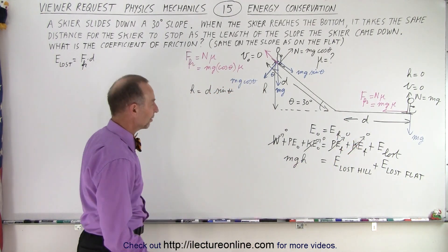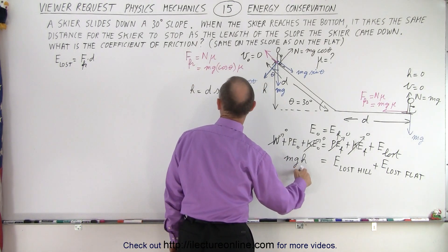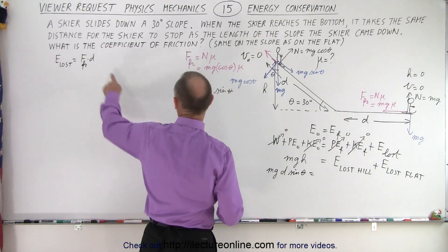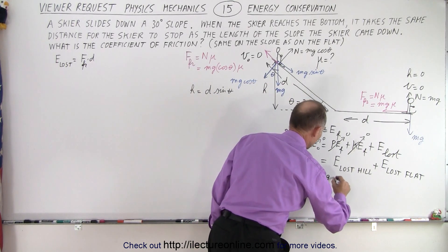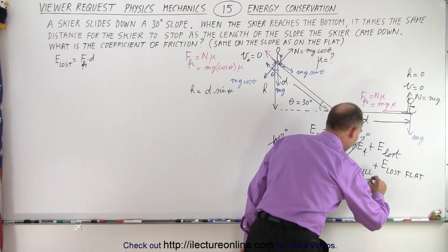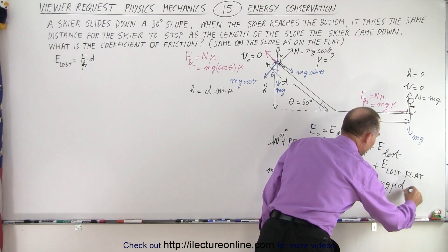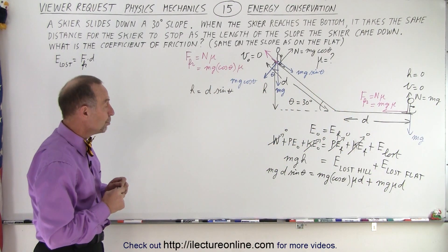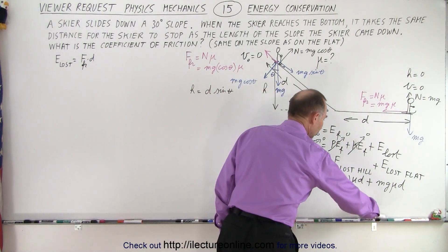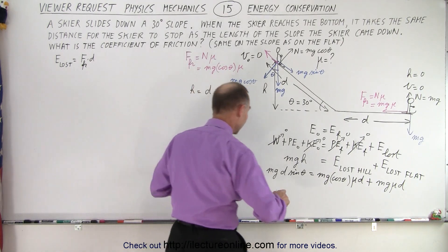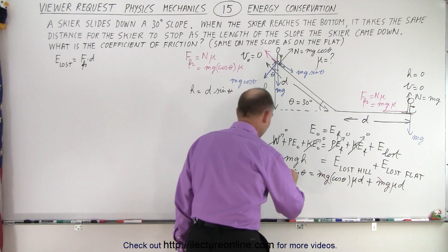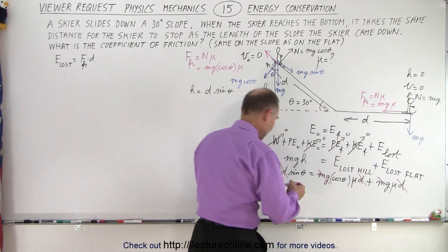Now we fill in the equation. On the left side: mg times h, where h is d sine theta, giving mg·d·sin θ. On the right: energy lost on the hill is mg·cos θ·μ·d, plus energy lost on the flat, which is mg·μ·d. Since every term has mg and every term has d, we can divide both sides by mg and by d to eliminate them, making the equation much simpler.